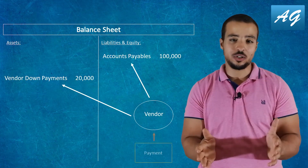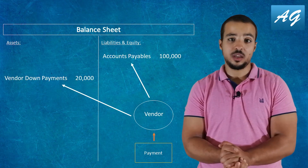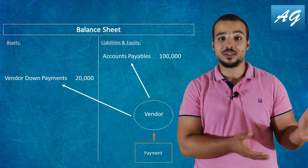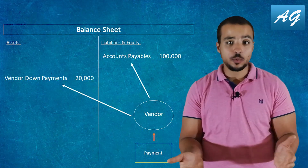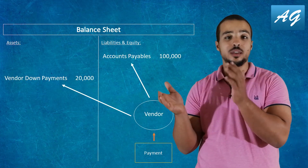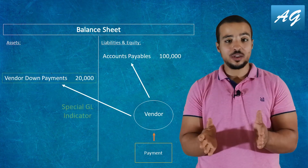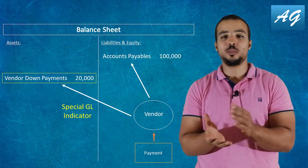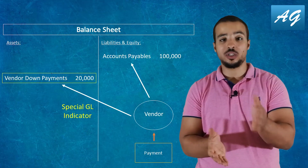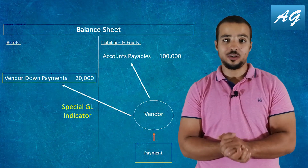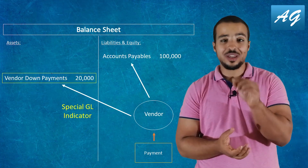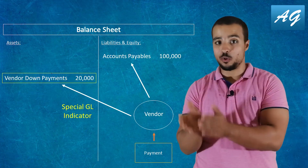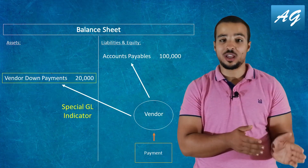When posting a payment to a supplier in SAP, how do we tell SAP that this payment should be considered a vendor down payment and go to the vendor down payments reconciliation account? Or if it should be considered a regular payment for a regular service and posted to the accounts payable reconciliation account? To do this, we have to use the special general ledger indicator — a very simple concept. This field is available in any financial transaction you post to the vendor.